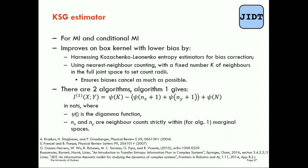To reiterate, the KSG estimator improves on box kernel estimation by giving you a lower bias, harnessing Kozachenko-Leonenko estimators for bias correction and using the nearest neighbor counting approach as part of that — using the fixed number k of nearest neighbors in the full joint space to set the radii. The way it does this ensures that we cancel our biases in our separate counts of the full joint space and the two marginals as much as possible. To read the full details, I'll point you to the references below, including the original paper by Kraskov and co-authors and summaries in our book on transfer entropy and the JADT paper.